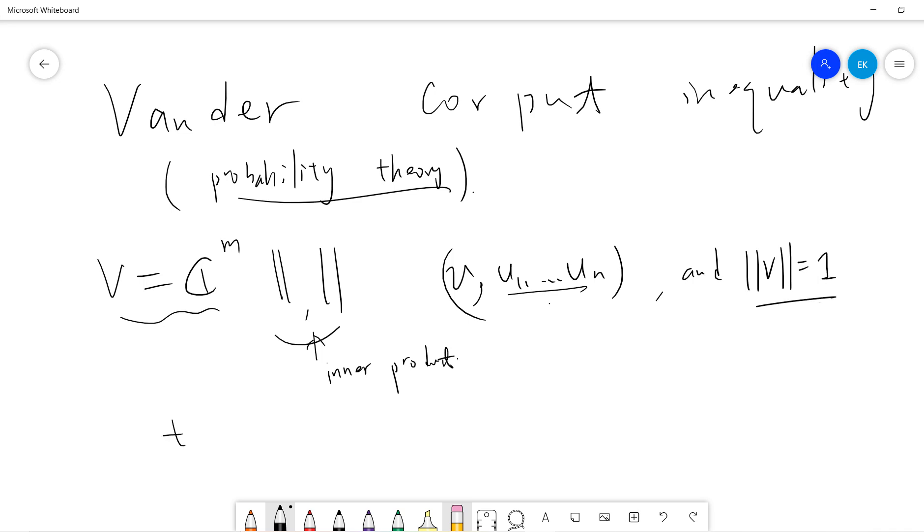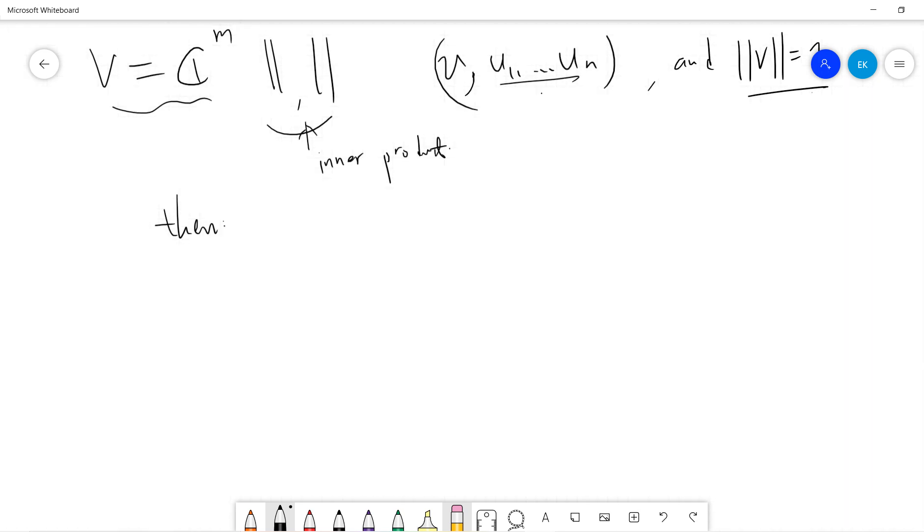Then what we have is, let's say we do the inner product of V and Ui and do this. So this is some complex number. We take a norm and sum from U1 to n. And then this will be less than or equal to the product. So i and j, Ui Uj squared.